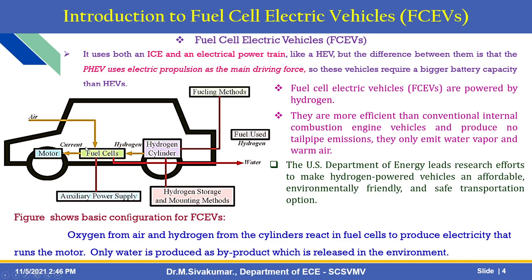A fuel cell electric vehicle uses both a fuel cell and an electrical powertrain, similar to a hybrid electric vehicle. Plug-in type electric vehicles also use electric propulsion as the main driving force, requiring a bigger battery capacity than hybrid electric vehicles. The US Department of Energy leads research efforts to make hydrogen-powered vehicles affordable, environmentally friendly, and safe. Oxygen from air and hydrogen from the cylinders react in fuel cells to produce electricity that runs the motor, and only water is produced as a byproduct.